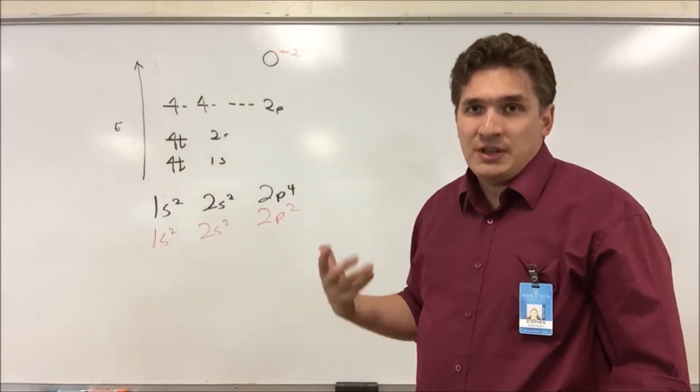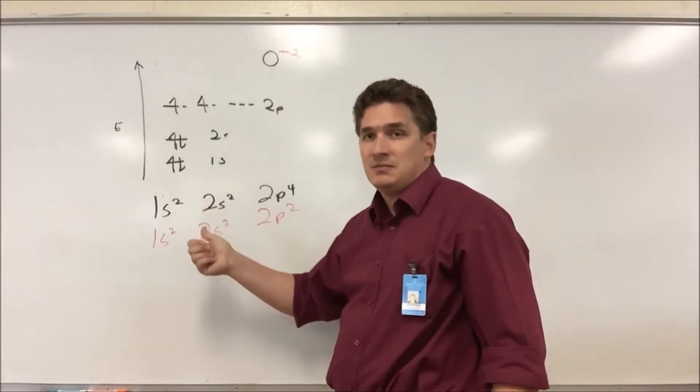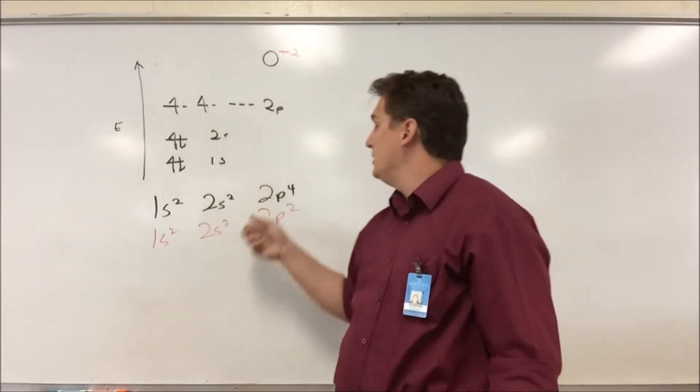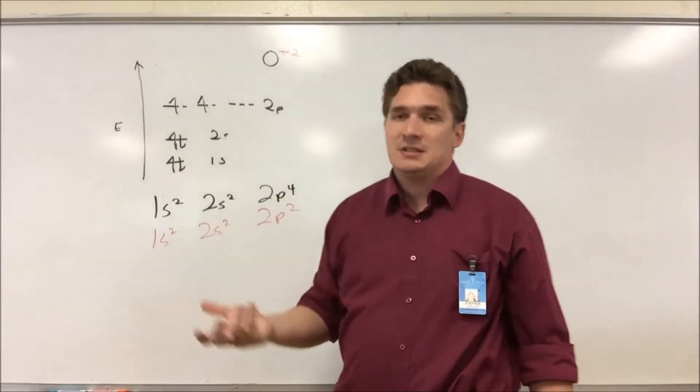If we change the charge or the oxidation state, when we sum these up, we'll get a different number. In the case of a minus two charge, we'll end up with 10 electrons. In the case of a plus two charge, we'll end up with six electrons.